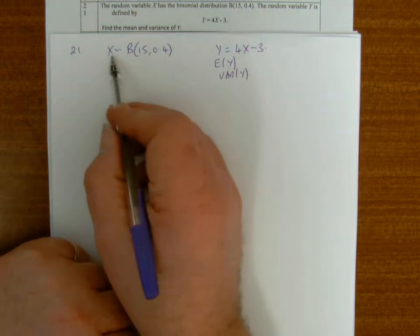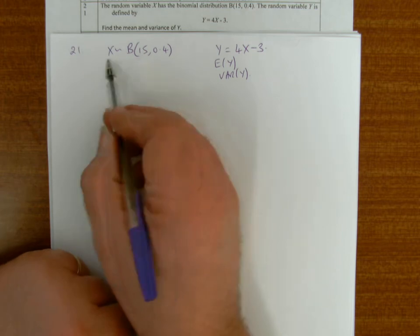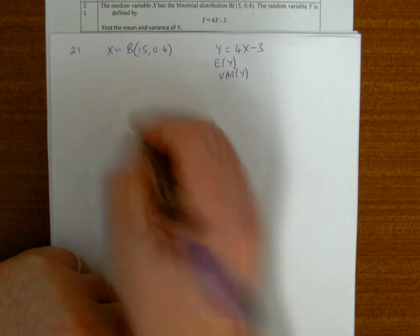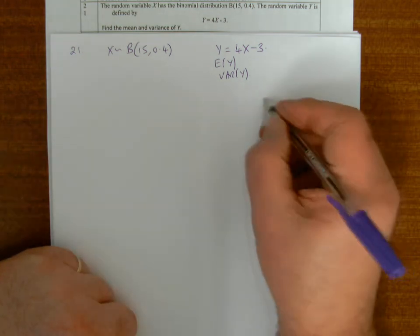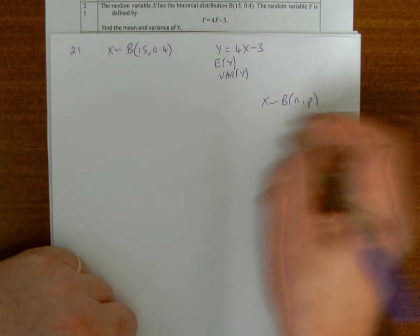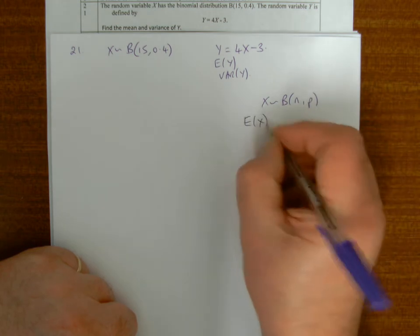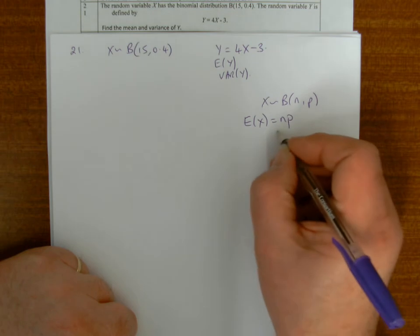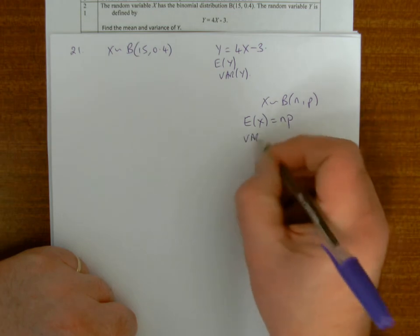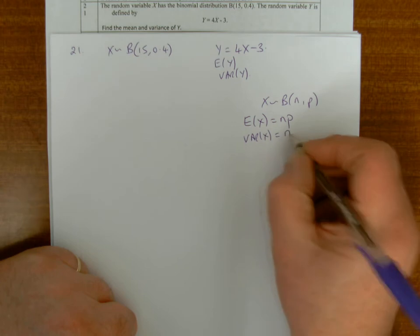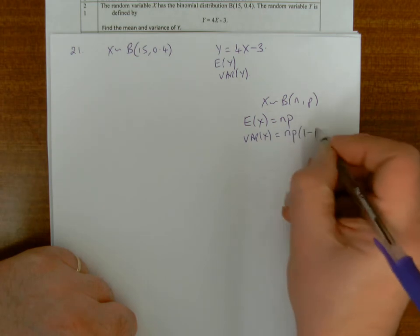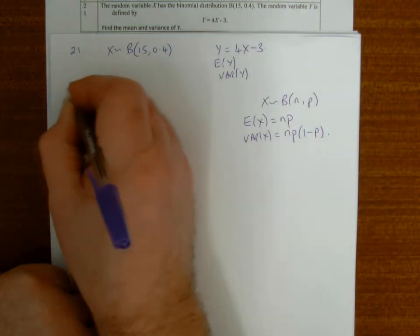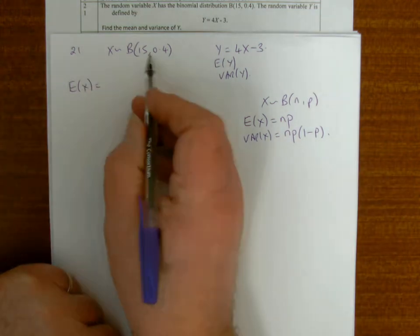Now for a binomial, for a general binomial n,p, E(X) is n times p and the variance of X is n times p times 1 minus p. So those are formulas you need to know. So E(X) then for this binomial function...